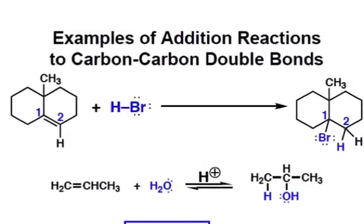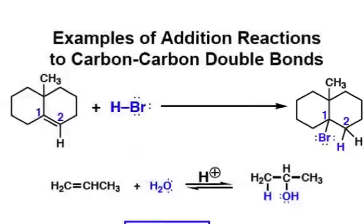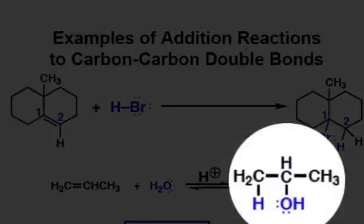why did bromine add to carbon 1 and the hydrogen add to carbon 2? Were there any considerations that needed to be made to predict that this specific reaction would occur? And what about the reaction below this? Why did the hydroxyl group preferentially add to that middle carbon instead of one of the end carbon atoms?